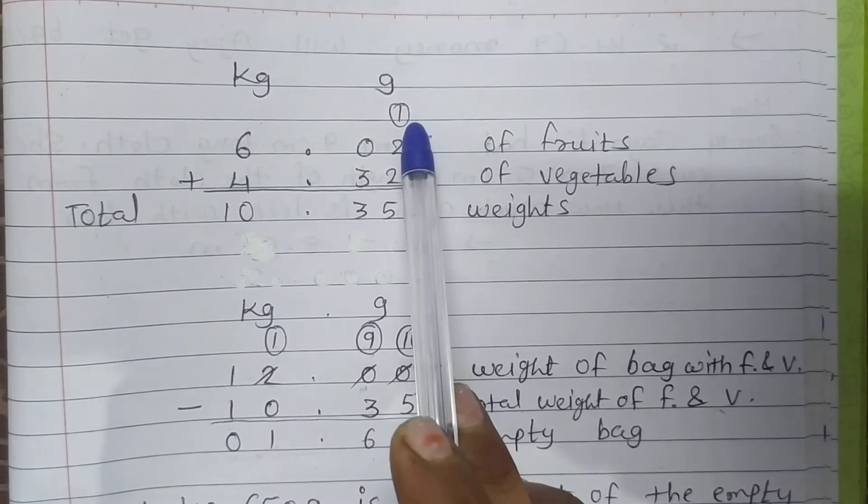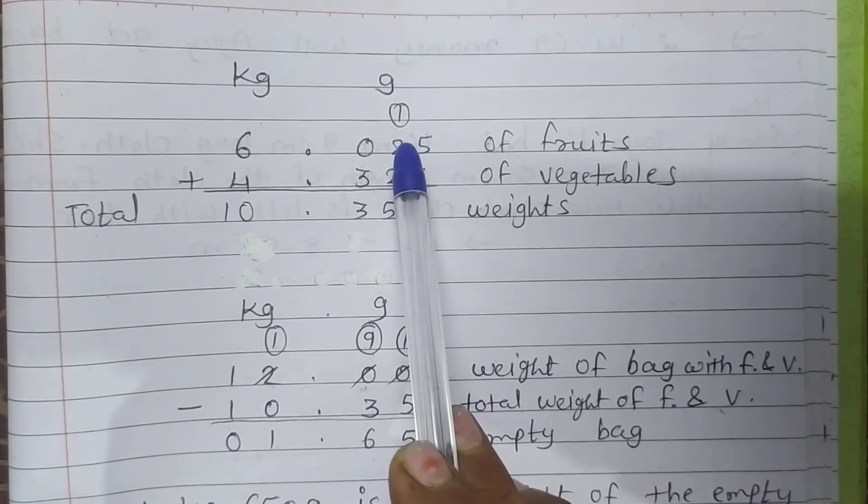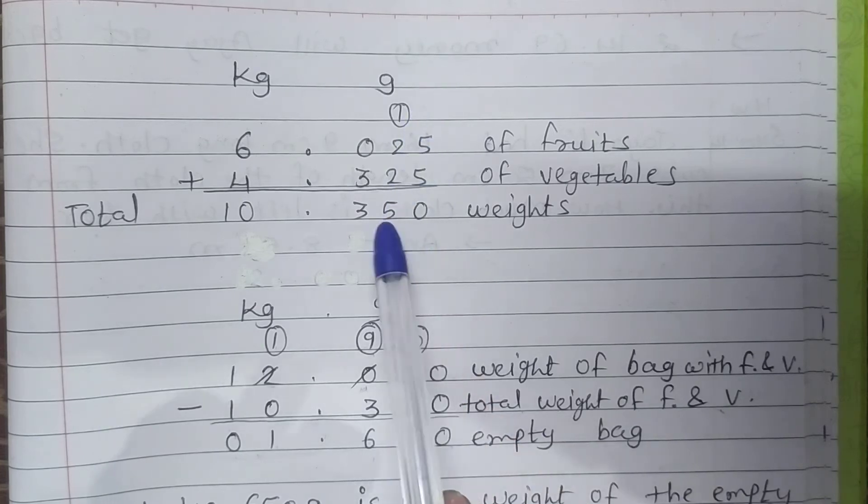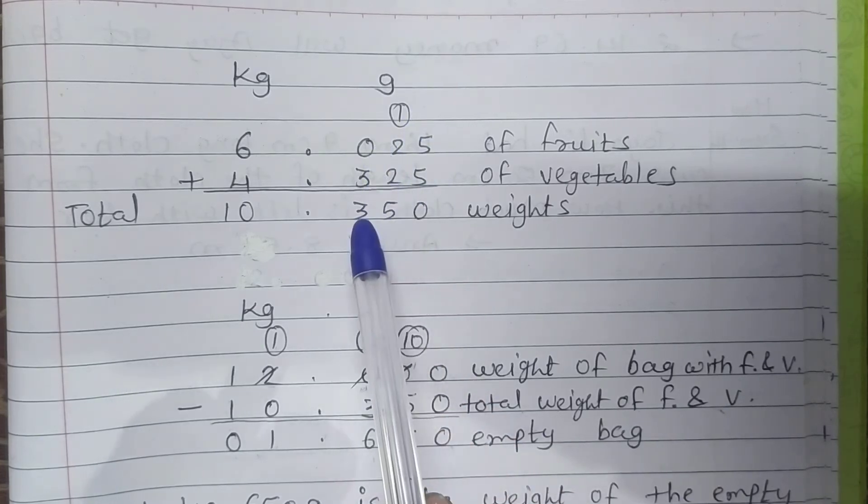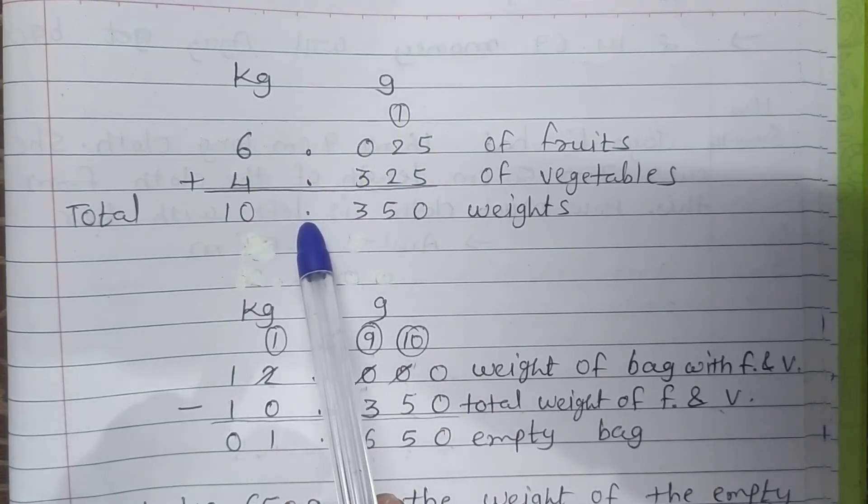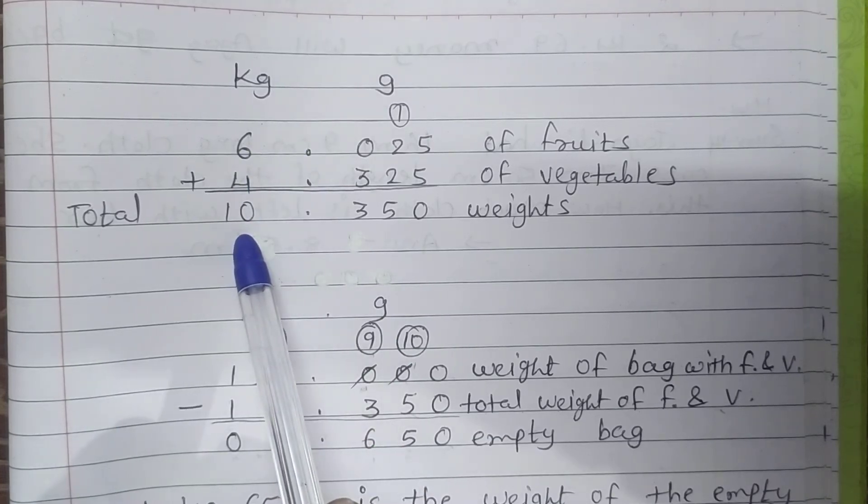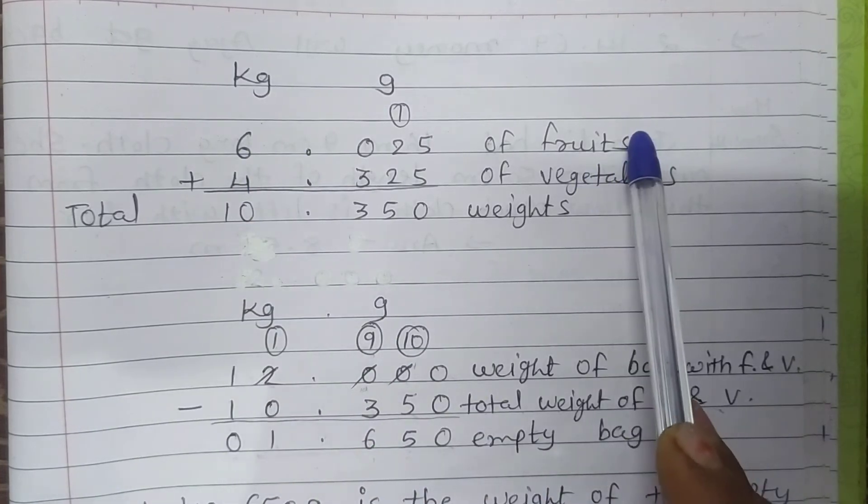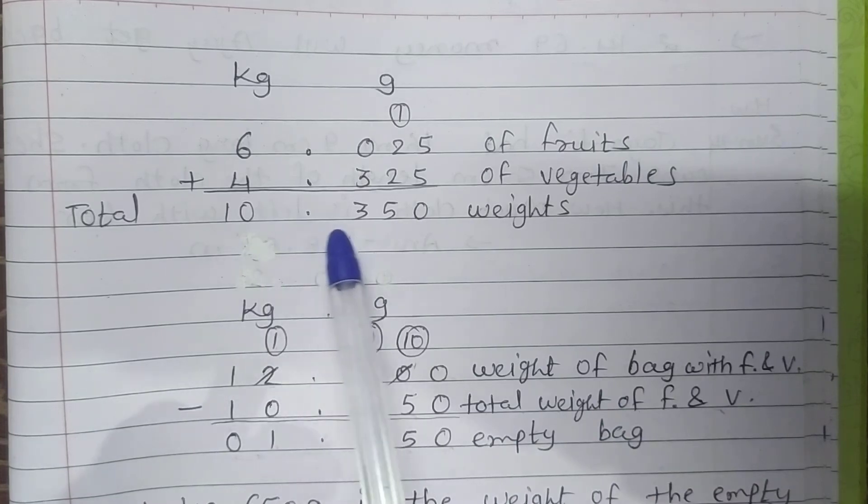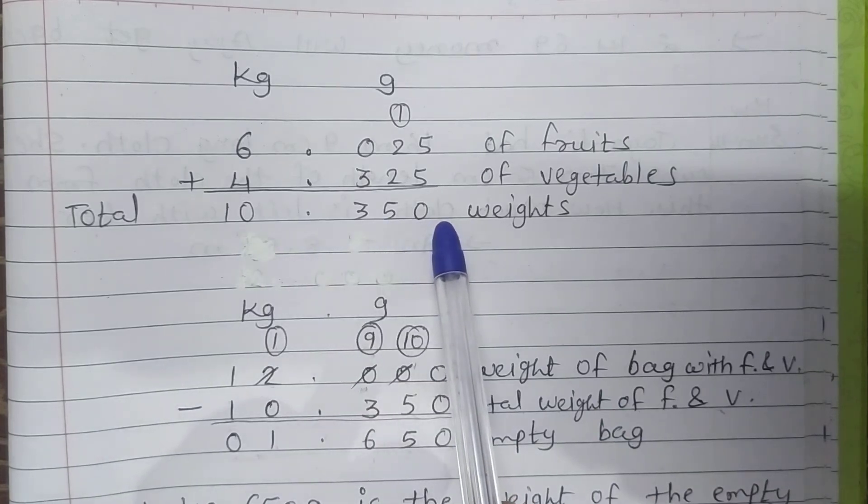Make column kg and gram. Then add 4 kg 325 gram of vegetables. Now do addition: 5 plus 5 is 10, 0 down and 1 carry. 2 plus 2 is 4, plus 1 is 5. Then 0 plus 3 is 3. Point as it is. 6 plus 4 is 10.